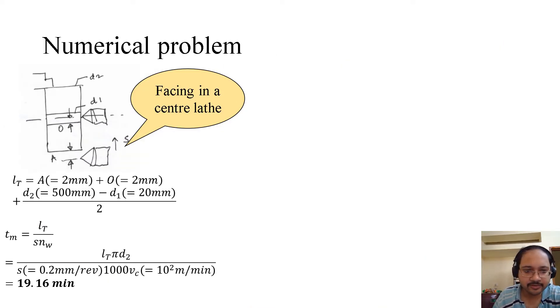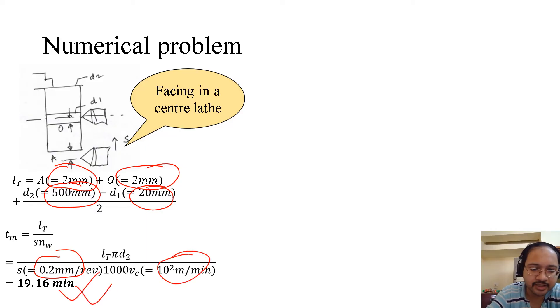Now, coming to a numerical problem. As we have already seen the relation, if we now put some values: the approach is 2 millimeters, over travel is also 2 millimeters, D2 is 500 and D1 is 20 millimeters, we can immediately find out the total tool travel. If we use the total tool travel with a feed of 0.2 millimeter per revolution and a cutting velocity of 100 meter per minute, we get 19.16 minutes.